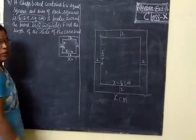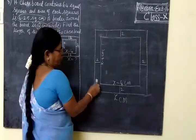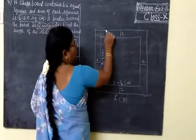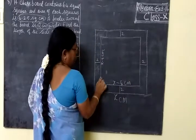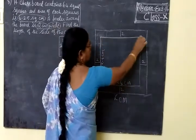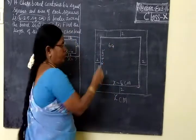Now, this is the chessboard. This is the border, the outer border. This width is 2 centimeters. This is the chessboard, the inner board. This is 64 equal squares.